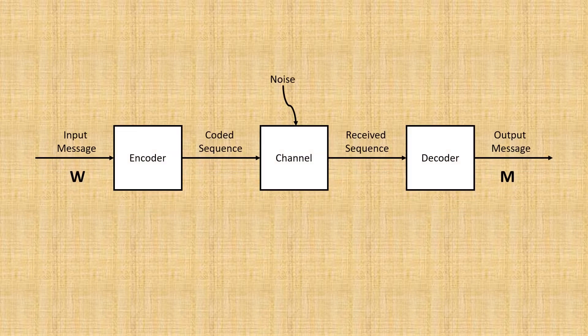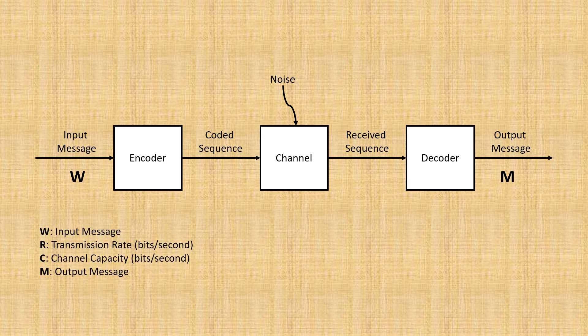This encoded message is then sent over a channel. That's like the pipeline that the information travels through. For our channel, we define a channel capacity, which we denote by the letter capital C, and which is usually measured in bits per second. This will limit how much information can be transmitted through the channel over a given time interval. It's almost like the width of our pipeline.